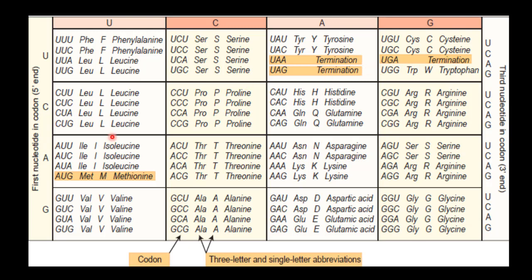There is another code, AUG, which codes for Methionine. It acts as the start codon. So there is a start codon and termination codons for each protein synthesis. UAA, UAG, and UGA are the three termination codons.